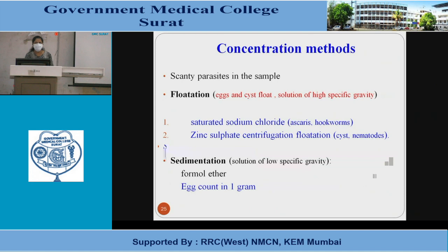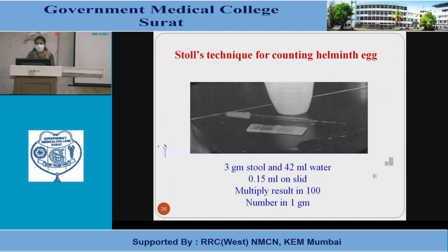Concentration methods are used when parasites are scanty in a sample. Flotation: eggs and cysts float in a solution of higher specific gravity — saturated sodium chloride and zinc sulfate centrifugation flotation techniques are used. Sedimentation: a solution of low specific gravity is used, in which formalin-ether is used. The Stoll's technique for counting helminthic eggs: 3 grams of stool and 42 ml of water are taken, then 0.15 ml on the slide — multiply result by 100 to get the number per gram.